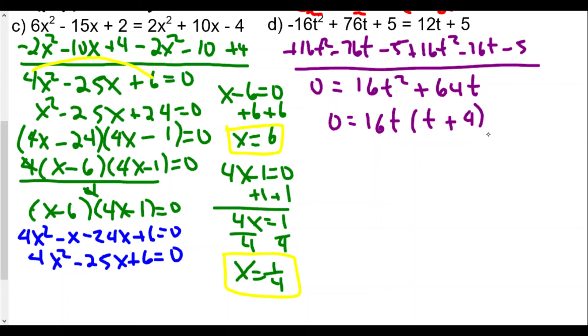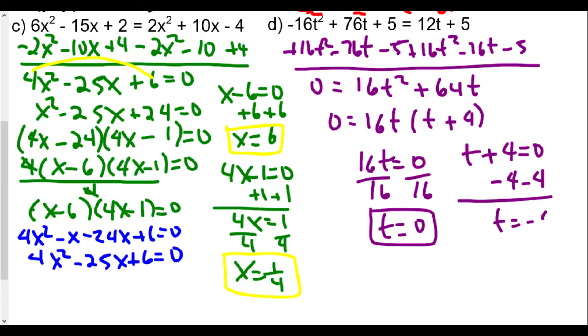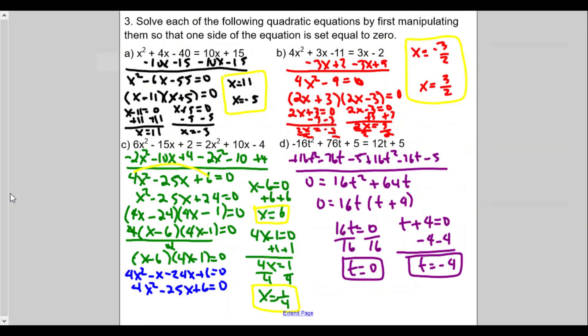We set each factor equal to 0. We have 16t = 0 and t + 4 = 0. We divide both sides by 16, t = 0. That's our first answer. Subtracting 4 on both sides for t + 4 = 0, we get t = -4. That's our solution. It seems a little bit weird, but notice everything got worked out nicely. Let me make this full page for everybody so you can see everything here.